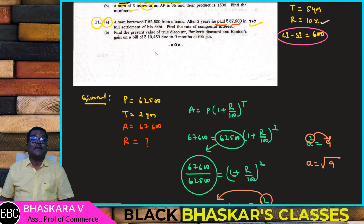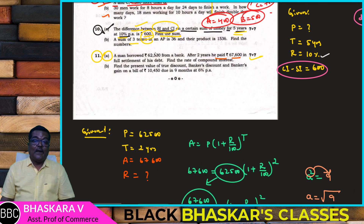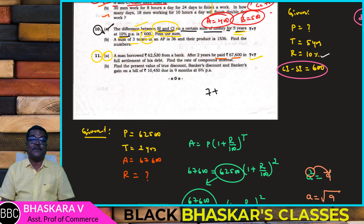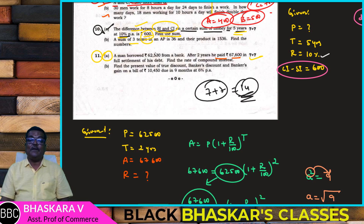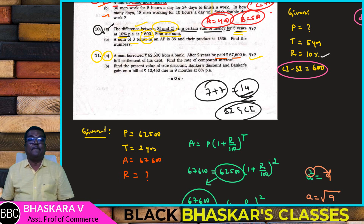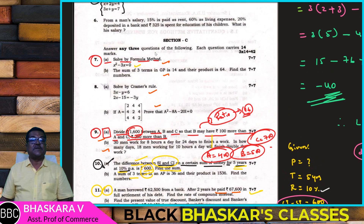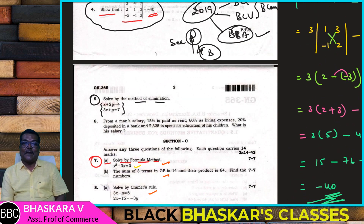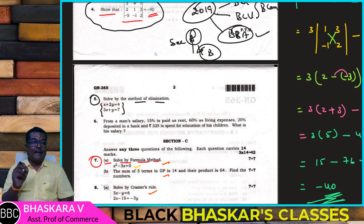Okay students, so in the BBA question paper, 7 plus 7 marks — total 14 marks — are from simple interest and compound interest problems.